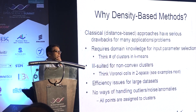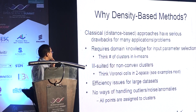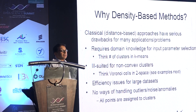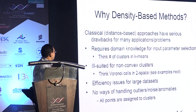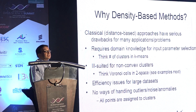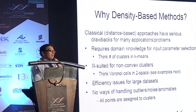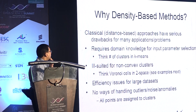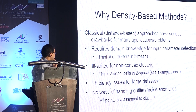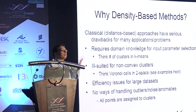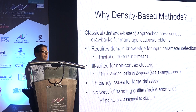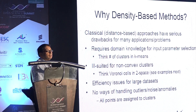So why do we have these density-based methods? The main reason is that classical methods have serious drawbacks. Number one, they require domain knowledge a priori — for example, if you are doing k-means clustering, you need to know the number of clusters in advance. Second, it is ill-suited for non-convex clusters. Third, efficiency issues — if you have really big data and huge datasets, they do not scale. And lastly, there are no ways of handling outliers, noise, or anomalies, because in k-means every point must be assigned to a cluster, so there is no concept of an outlier.